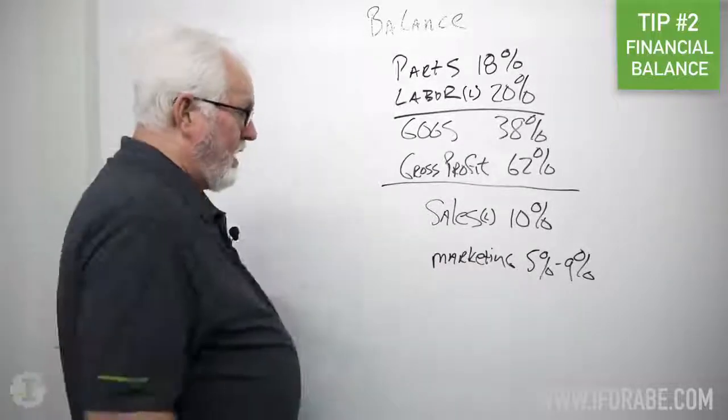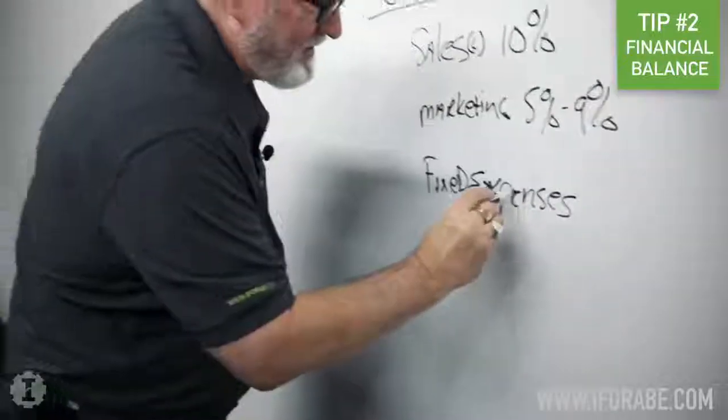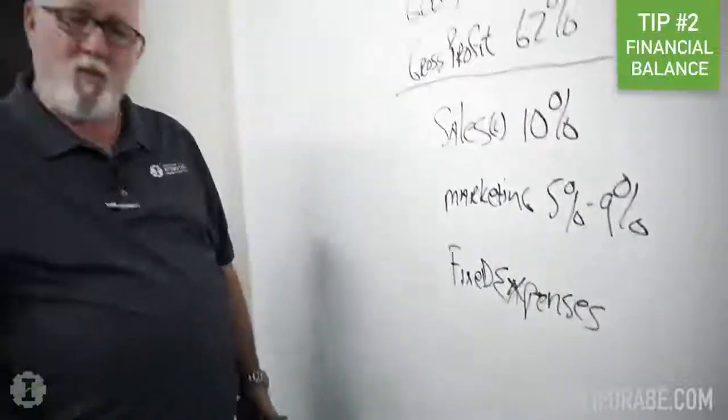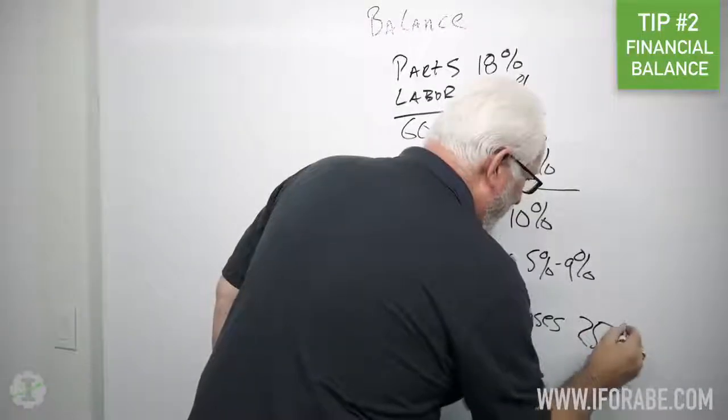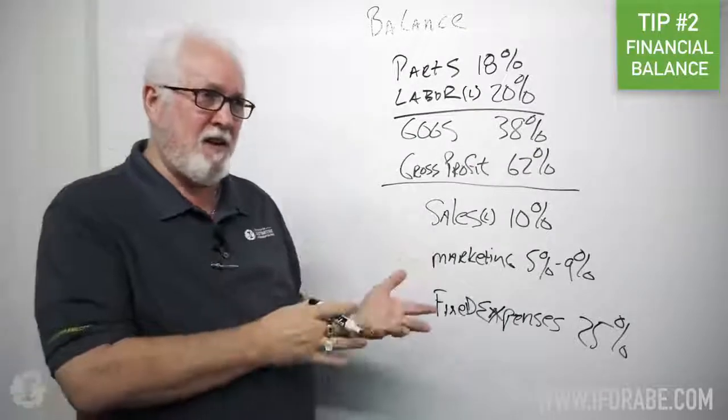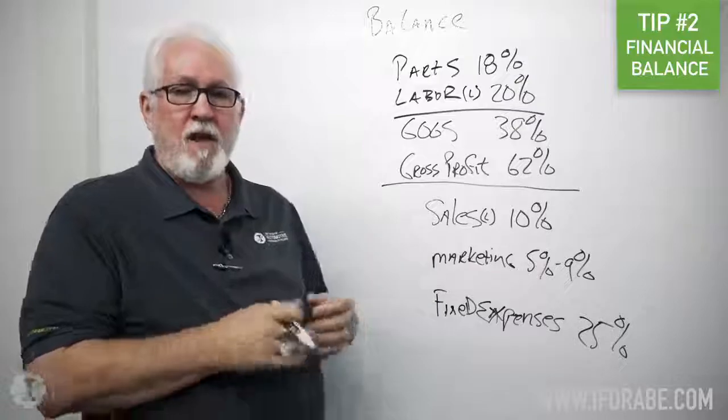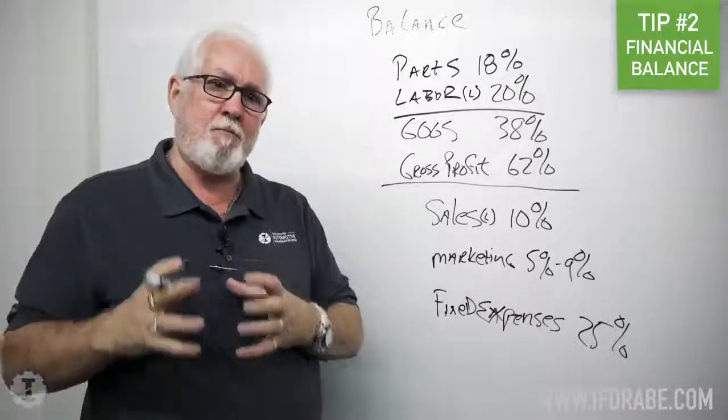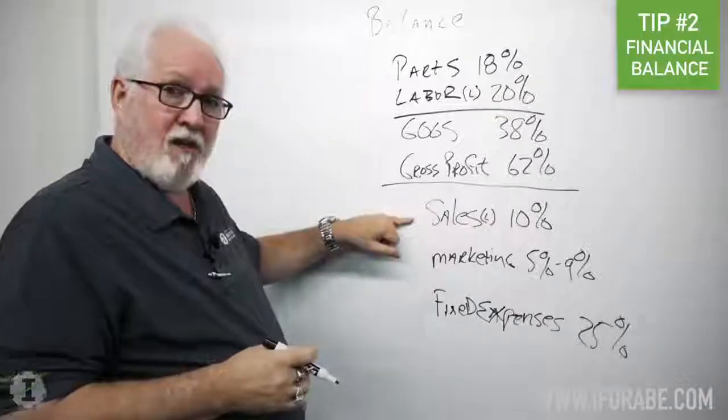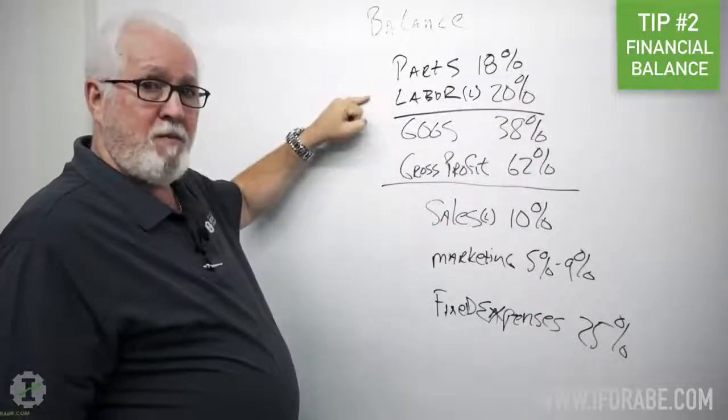All right, now that leaves us with everything else, the rest of the fixed expenses. Now we want those to be about 25%. Now fixed expenses includes if the owner participates in the company, not as a service advisor necessarily or as a tech, because if the owner was writing service we would take that part of his wage and put it into service sales cost. And if the owner was working on cars we would take that part of his wage and put it into labor cost.